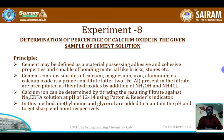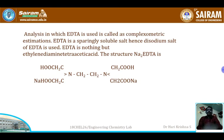We use Patton and Reeder's indicator for this titration. Diethylamine is added to maintain pH around 12 to 14, and glycerol is added to get a sharp endpoint. Since we are using Na₂EDTA, this is called complexometric estimation. As EDTA is sparingly soluble, we use disodium EDTA to make it completely soluble.